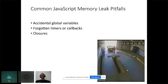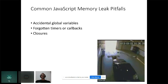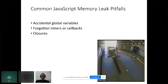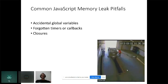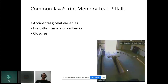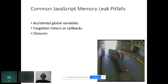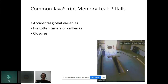The third pitfall is closures. A closure is a variable inside a function that stays alive even after the function finishes execution. When you have closures, those variables will remain in memory after the function ends — they get stuck in memory until you explicitly clear them. Closures can cause memory leaks.